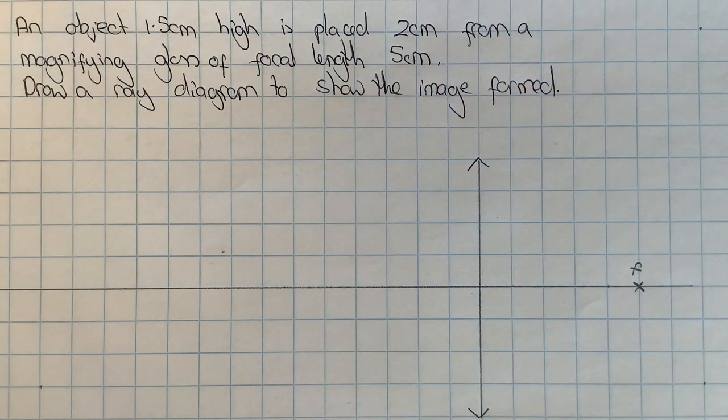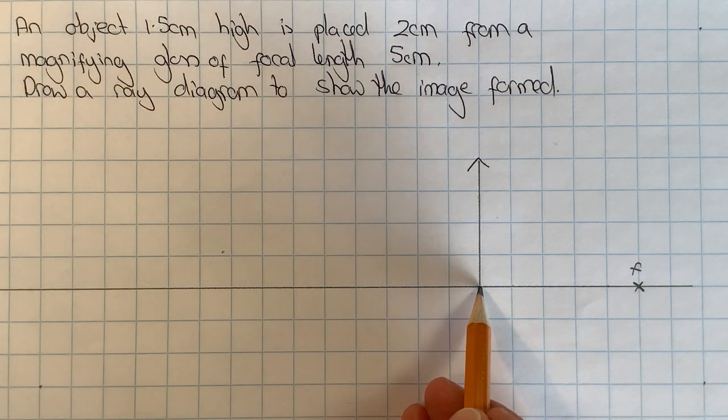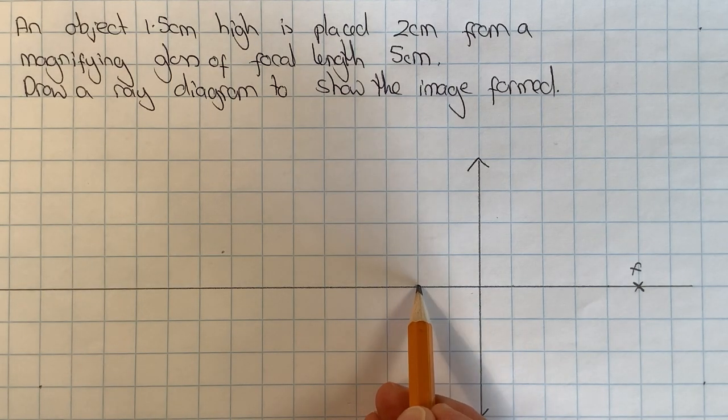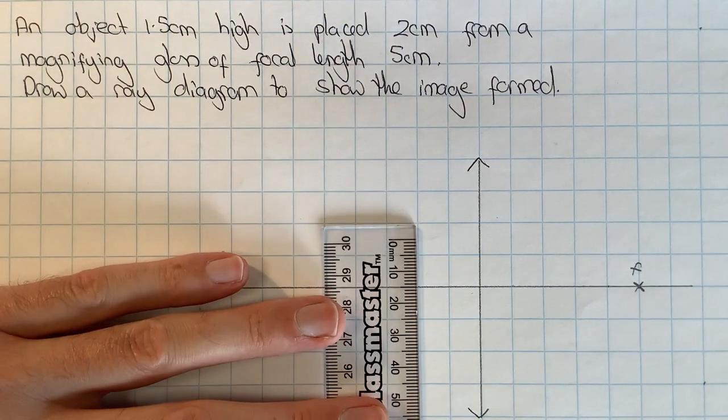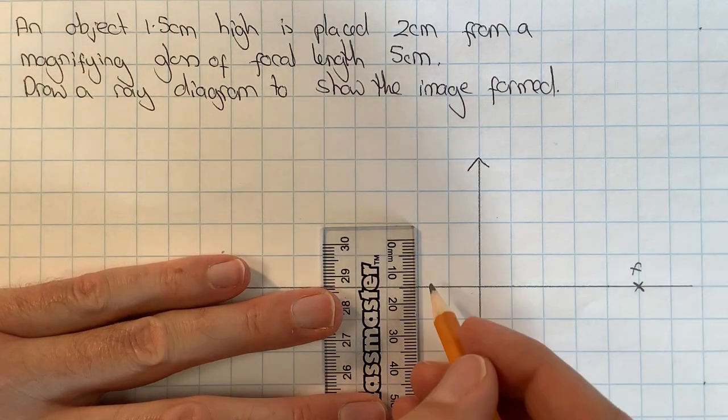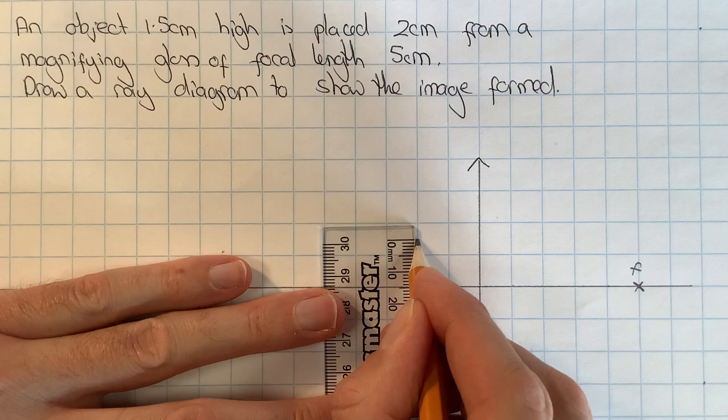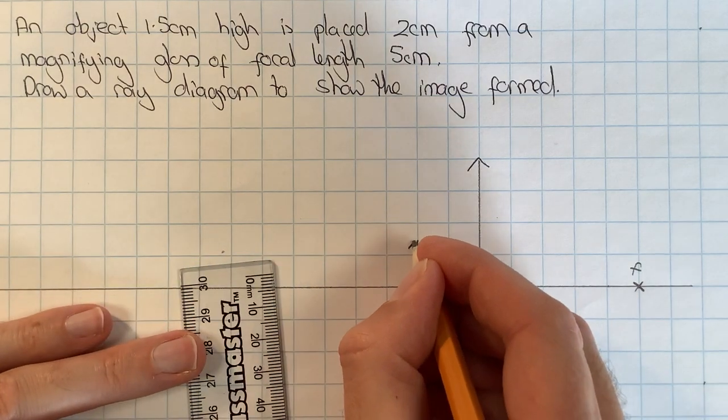Now I'm going to draw in my object, which is a 1.5 centimeter object placed two centimeters away. So I'm going to count one, two centimeters back from the lens and draw in my object, which is going to be one and a half centimeters high.